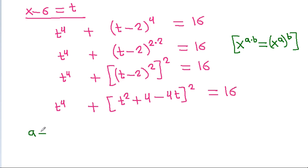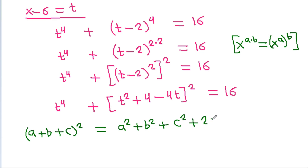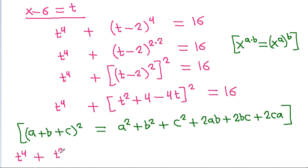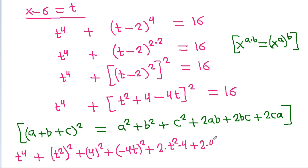Using the identity (a+b+c)² = a² + b² + c² + 2ab + 2bc + 2ca, we expand (t² - 4t + 4)². This gives t⁴ + [t⁴ + 16t² + 16 - 8t³ + 8t² - 32t + ... ] = 16, collecting all resulting terms.